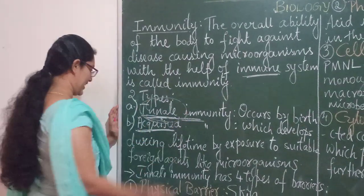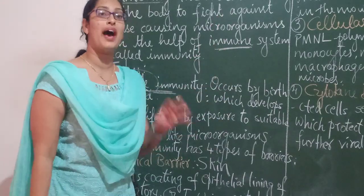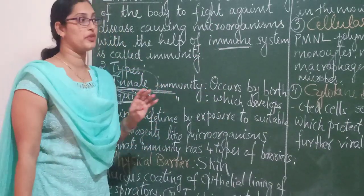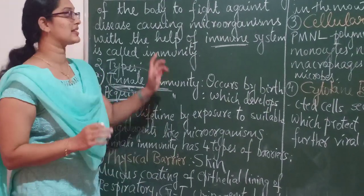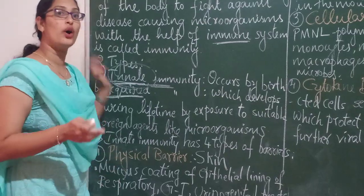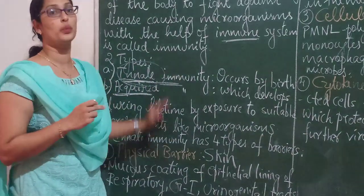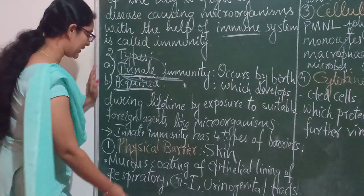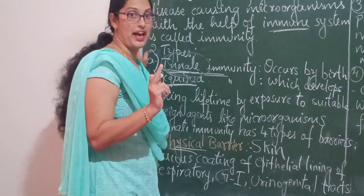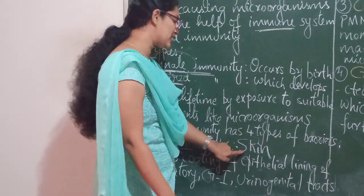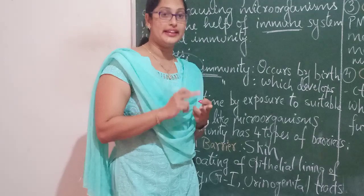Now we will see innate immunity in detail. Innate immunity has four types of barriers. While a child is born, these four barriers will already be there. This is a very important question — it will be asked for two marks, three marks, as well as five marks. The first barrier is the physical barrier. So skin and mucus coating — these two serve as the physical barriers in innate immunity.